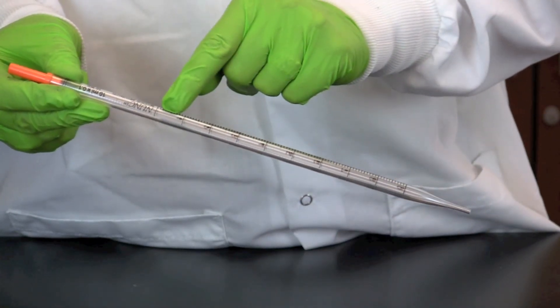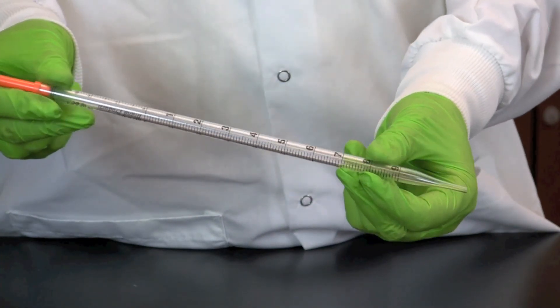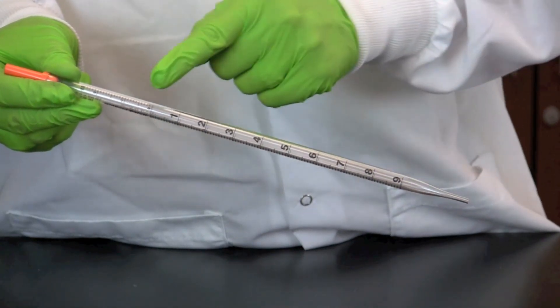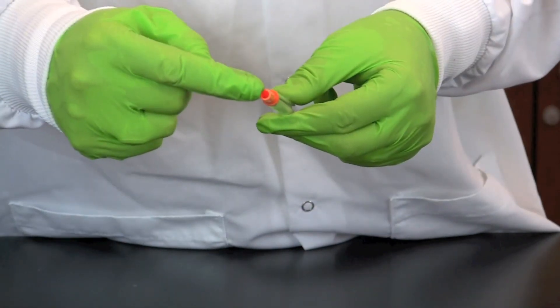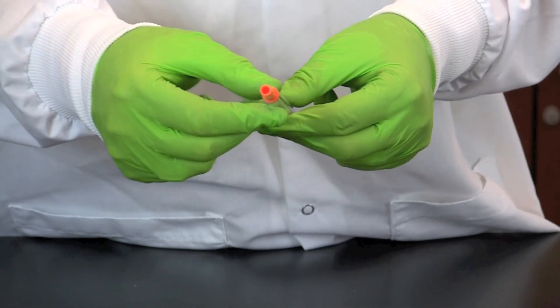Serological pipettes have two scales, one for filling and on the other side, one for dispensing. They often have a cotton plug in one end to prevent contaminants from being drawn into the vacuum source.